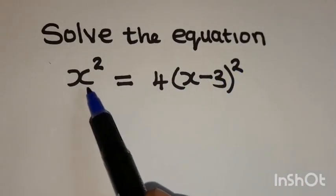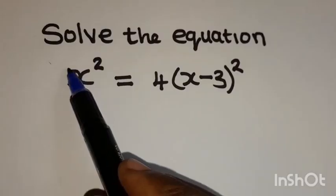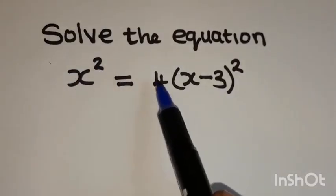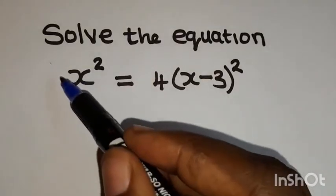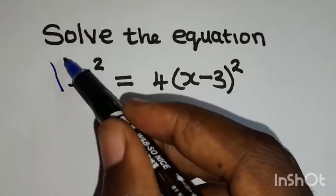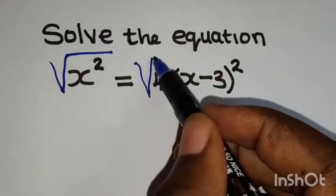So for us to solve this equation, first of all, we need to eliminate the powers of 2. So we are going to do that by introducing a square root on both sides of this equation.